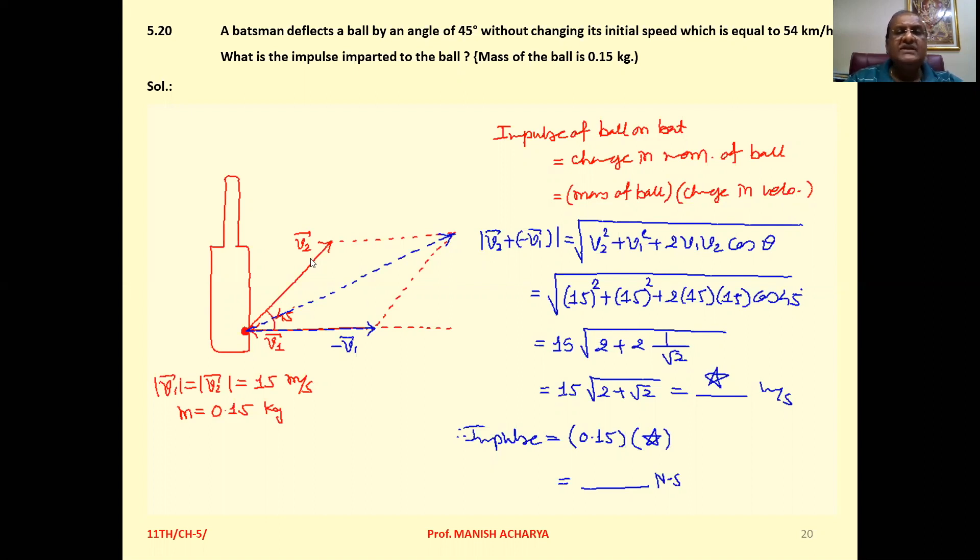So changing velocity that is V2 minus V1 means we have to take simply the vector summation of these two. So as parallelogram method, this diagonal that is the resultant of this vector and this vector. So we will get this diagonal that is V2 minus V1. But we want change in velocity magnitude wise.